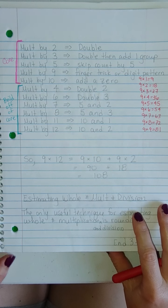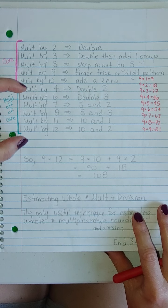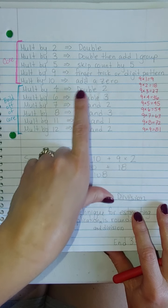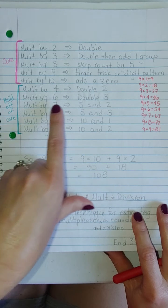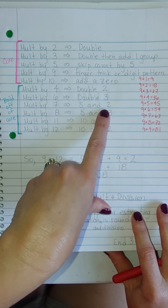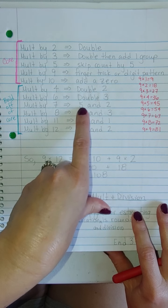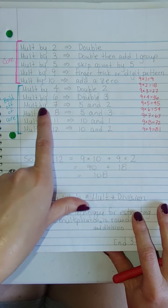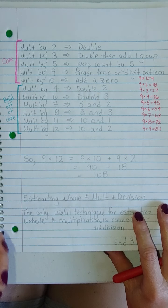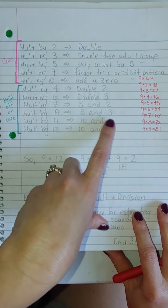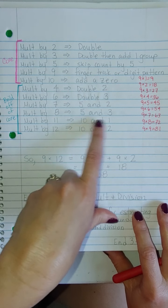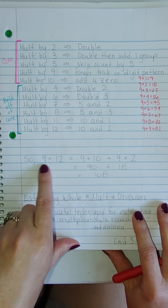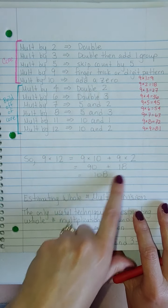Now, once we had that core, now we built off of that, that fours were just double the twos. Sixes were double the threes. Sevens were a combination of five and two. You know, so like eight times seven. Well, that was eight times five plus eight times two. And while that may sound complicated, that is what worked best for him. The eights were the fives and the threes. The elevens were ten and one. Twelve is ten and two. So if he had to do nine times twelve, he would do nine times ten and nine times two and add those together.